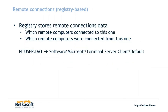Finally, we have remote connections — these are registry-based. The registry stores remote connection data: where the connection came from, who it connected to, and how many computers were connected. The ntuser.dat file contains the software Microsoft Terminal Server Client default key, which helps you understand what remote computers connected to the victim machine, and vice versa.